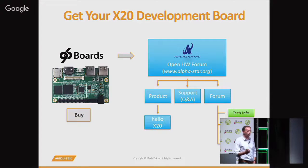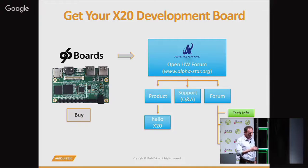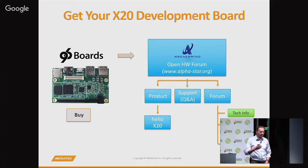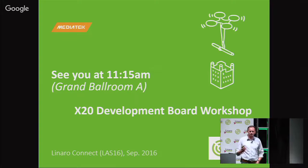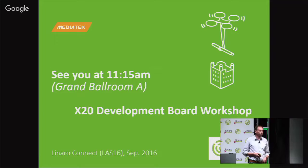To get your board today, go to 96boards.org and click Buy — it will redirect you to the ArcherMind Open Hardware forum, where you can purchase domestically or overseas. ArcherMind will support specific needs and provide information and test cases. If you need anything specific from ArcherMind, there is also an email contact. More information will be available at the workshop at 11:15, hosted by the ArcherMind partner. Thank you.